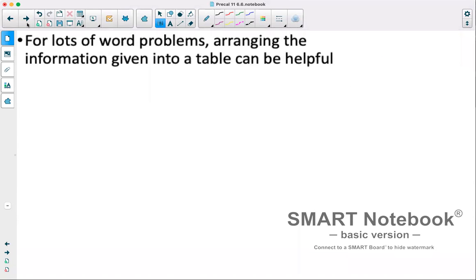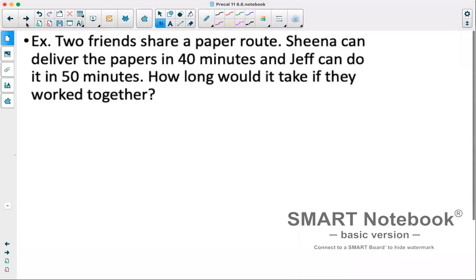For lots of word problems, arranging information into a table can be helpful. Our first example is two friends share a paper route. Sheena can deliver the papers in 40 minutes and Jeff can do it in 50 minutes. How long would it take if they work together?